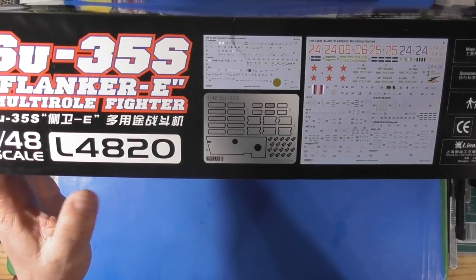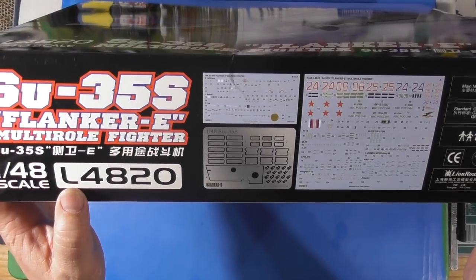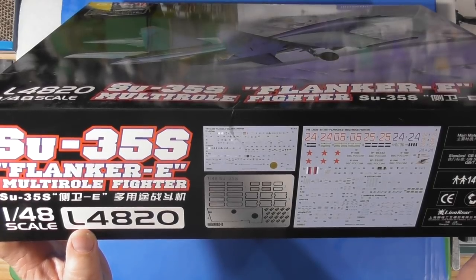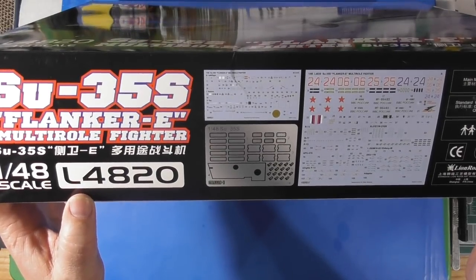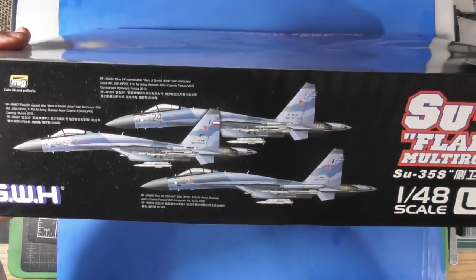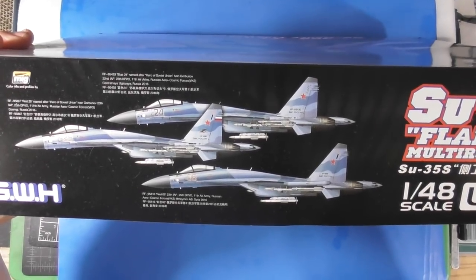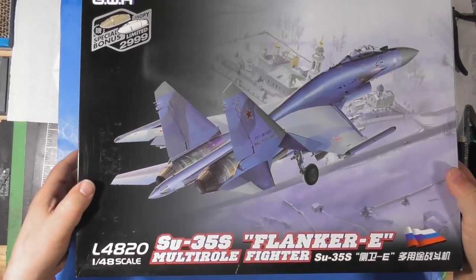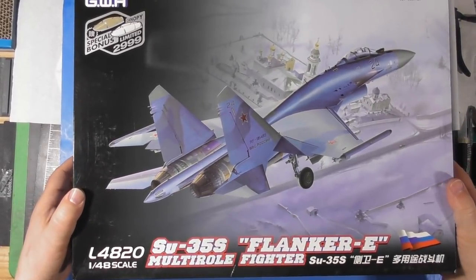It comes with some PE, some decals that look like they're made in China. Let's see how many pieces there are. Three schemes on this side: Blue 24, Red 25, Red 06. Good looking box art as usual from Great Wall Hobby.